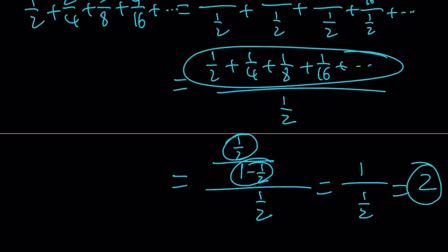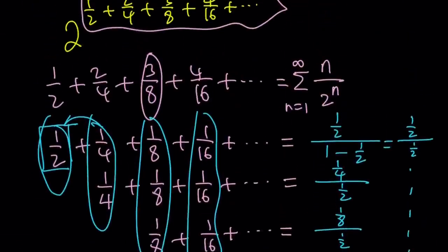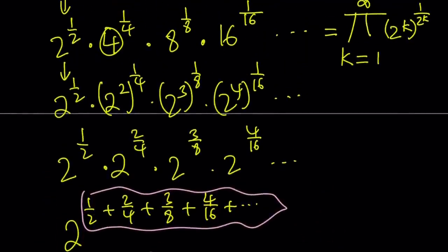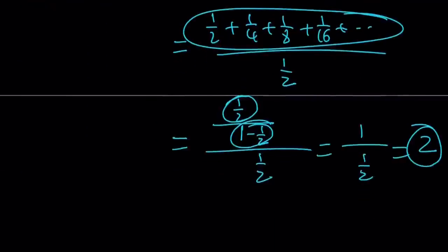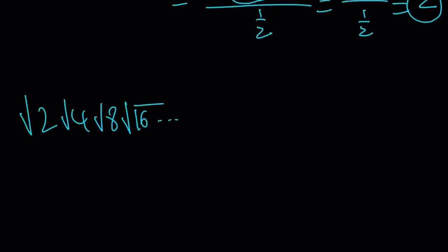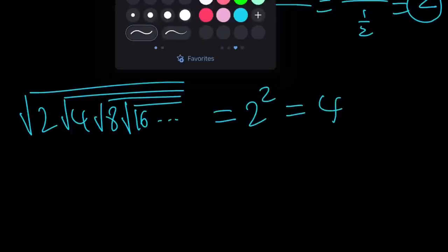So the answer is 2 — but that is just the exponent. We have 2 to the power of that exponent, and that exponent happens to be 2. So the answer for our original expression is 2 to the power 2, which equals 4.